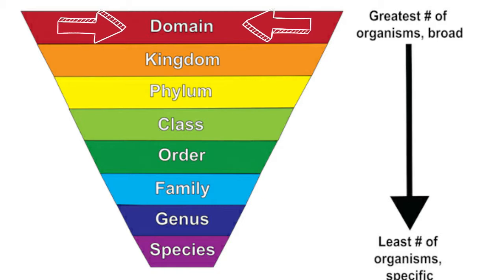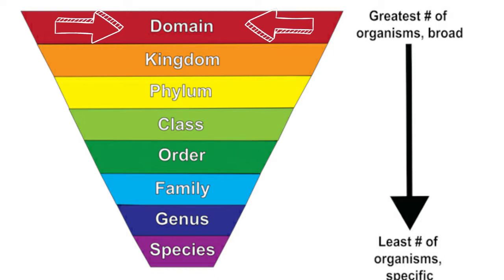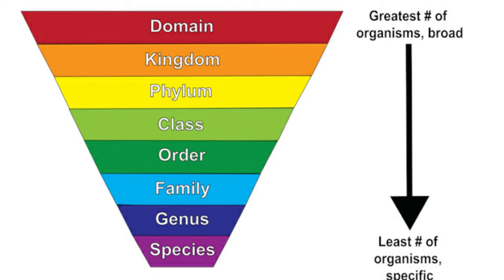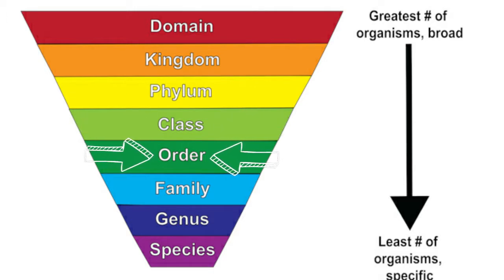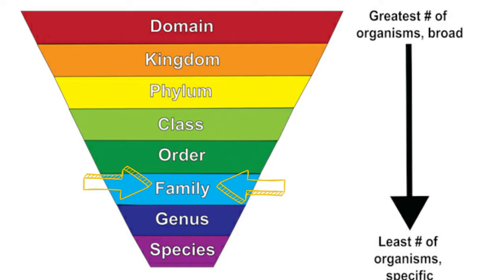At the broadest point of our categories we have the domain, which covers all living things. Beneath that we have the kingdom, then phylum, class, order, family, genus, and species.